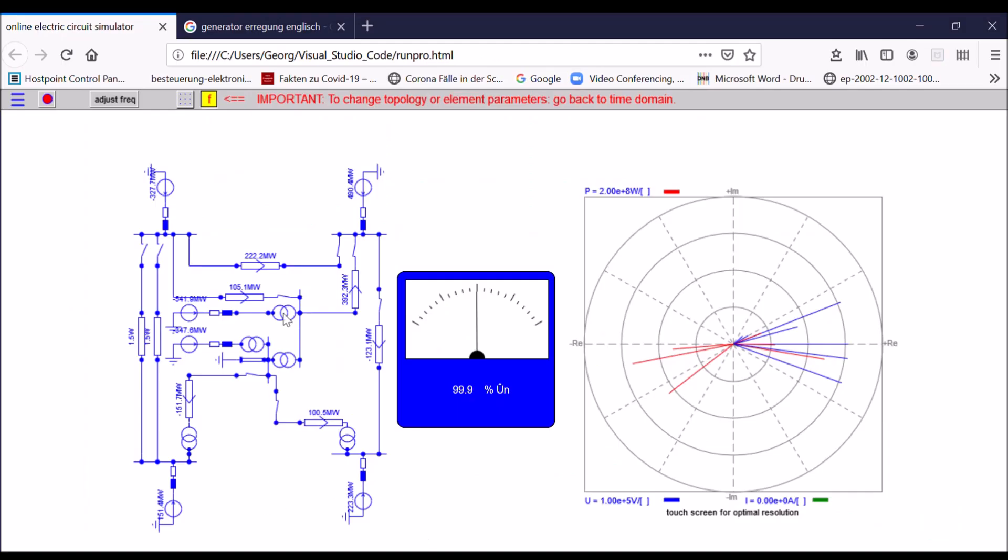Here you see power lines and you see the energy flow direction which will change if you open or close breakers. If you open or close breakers you see how the power changes, maybe the direction.